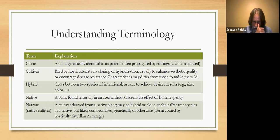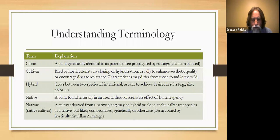A clone is a plant that is identical to its parent — it comes about not through sexual reproduction but typically through vegetative reproduction. This can happen in nature; quaking aspen and smooth sumac are two of our native plants that reproduce as clones.